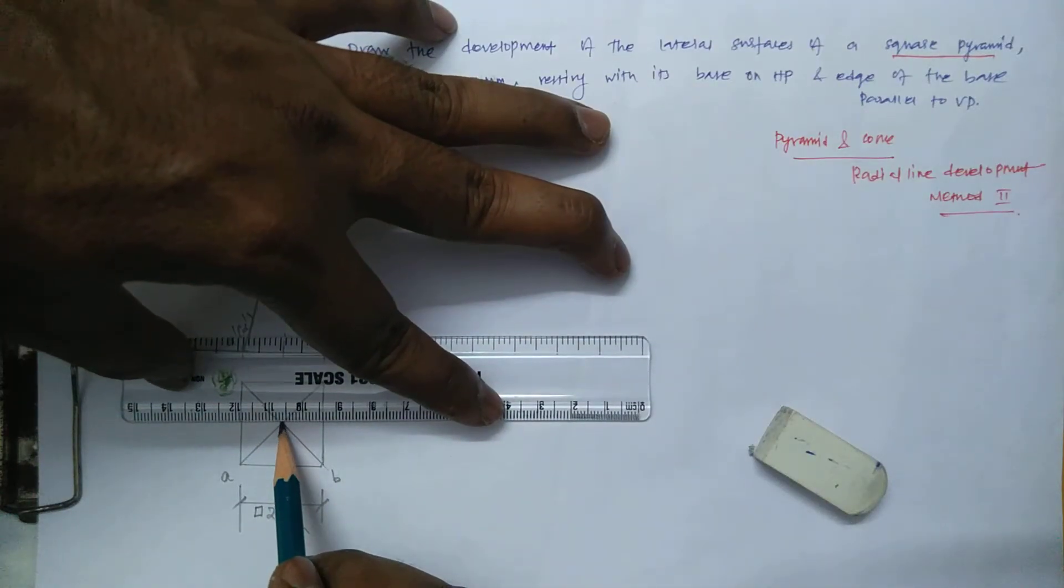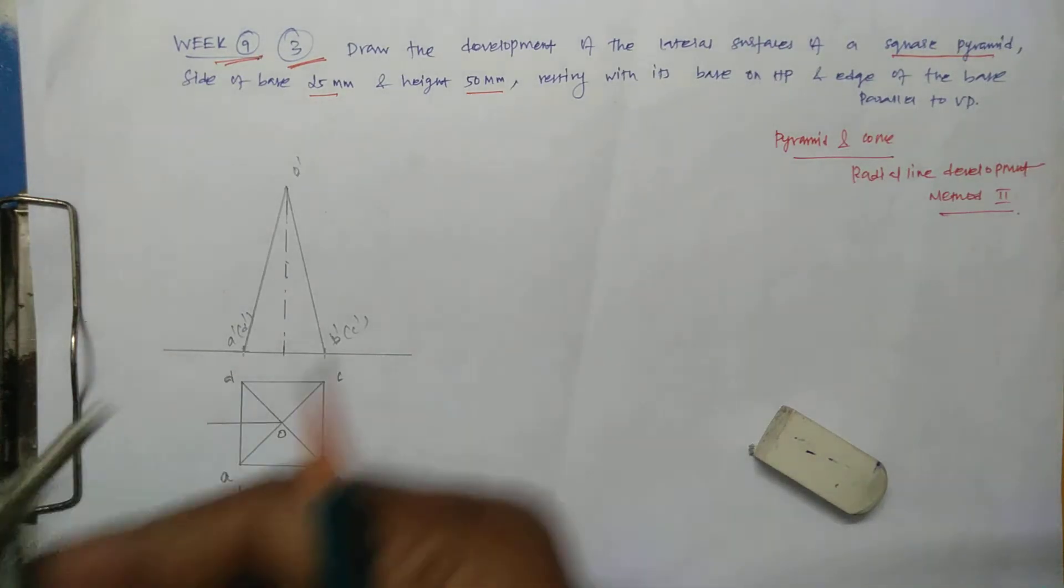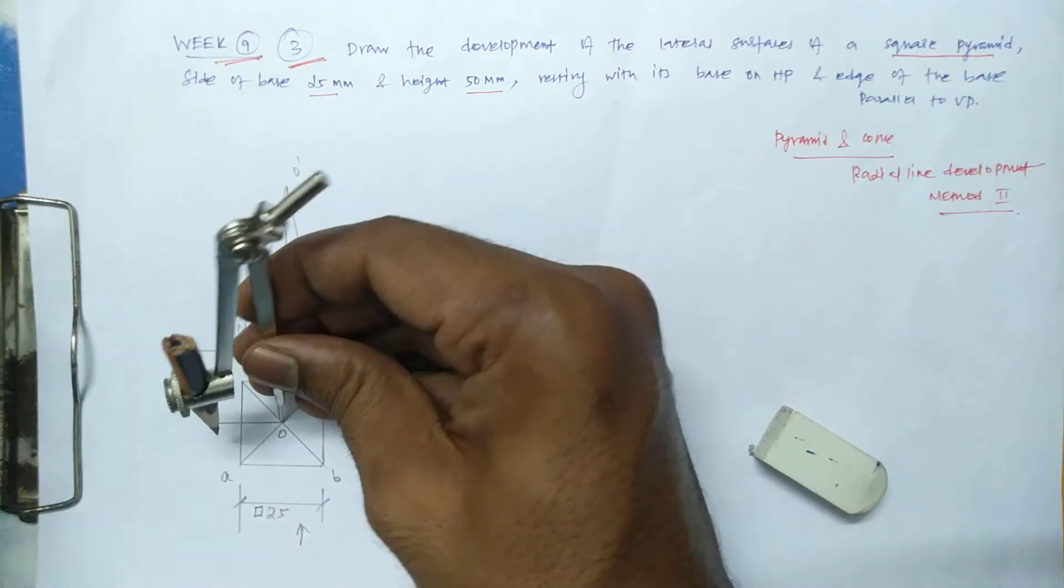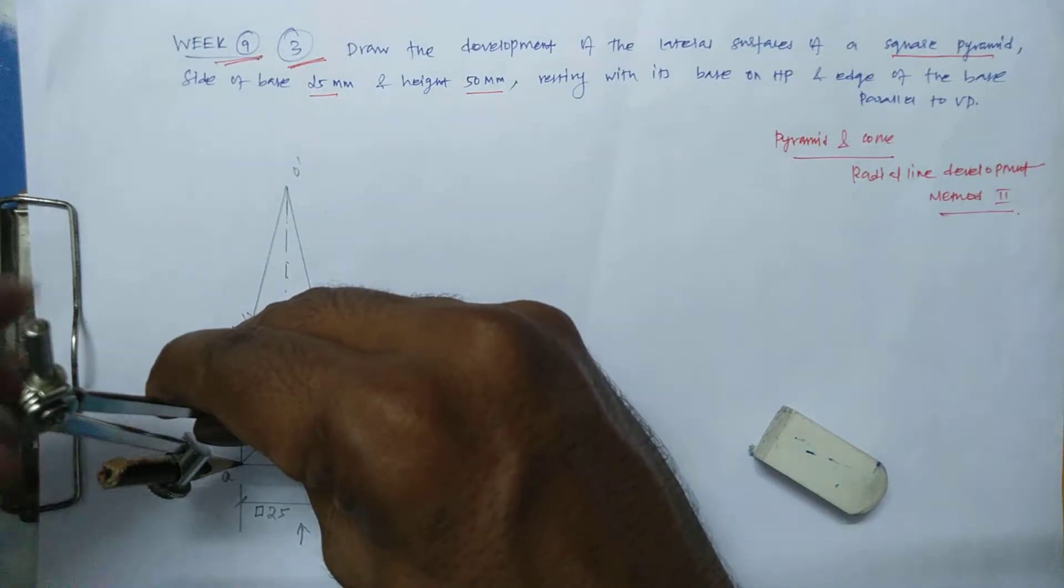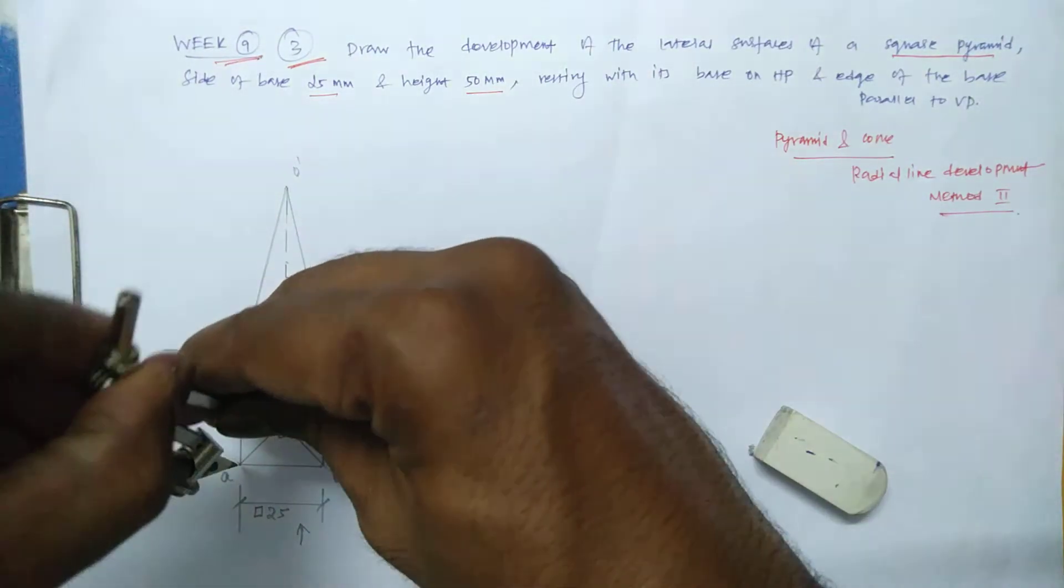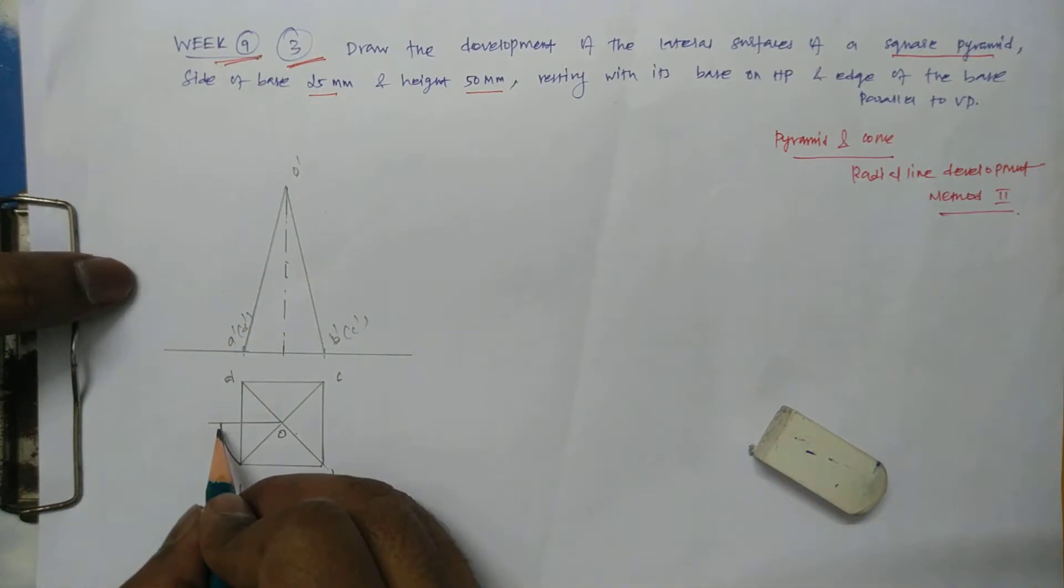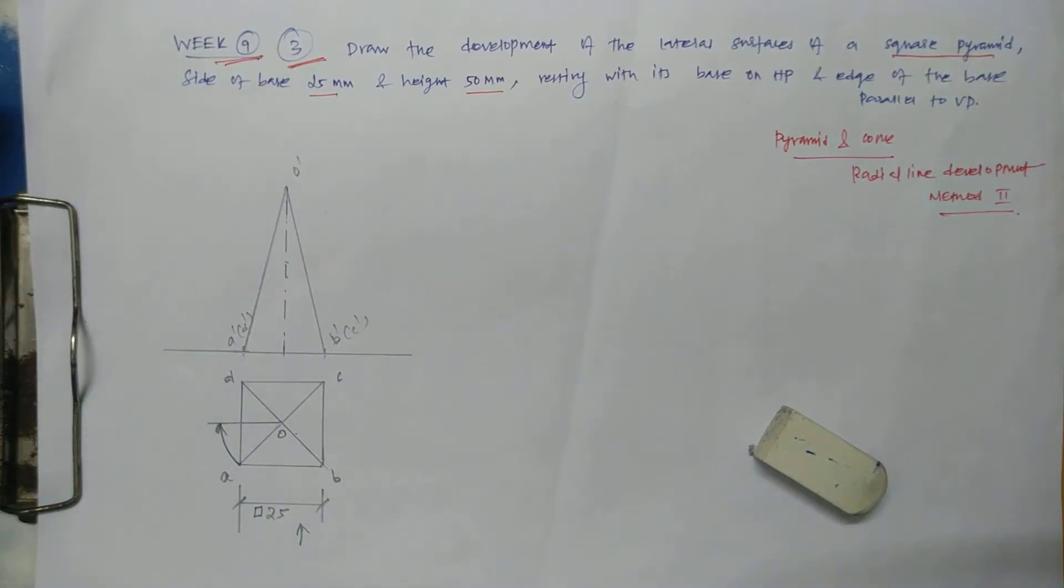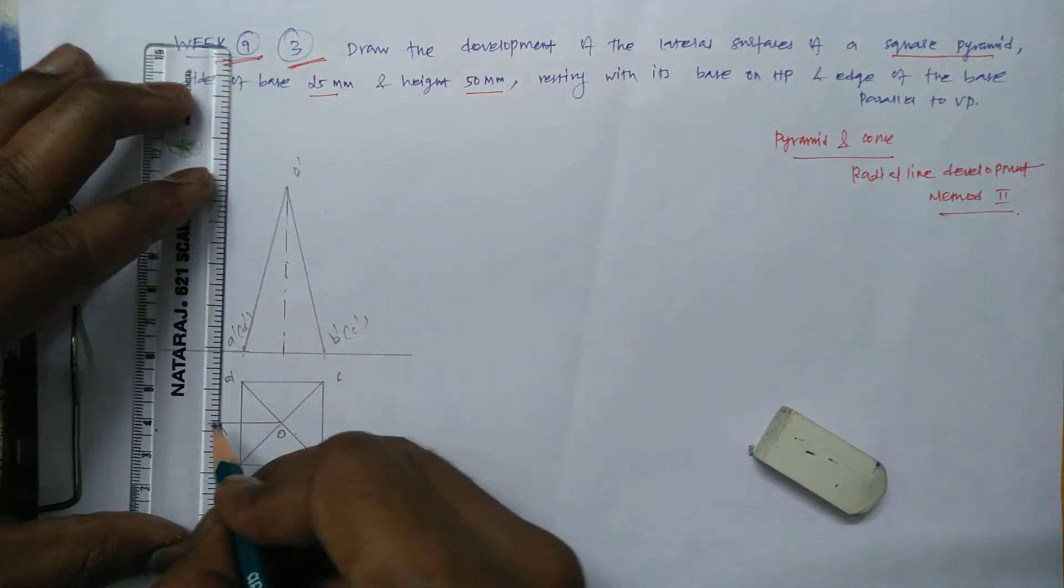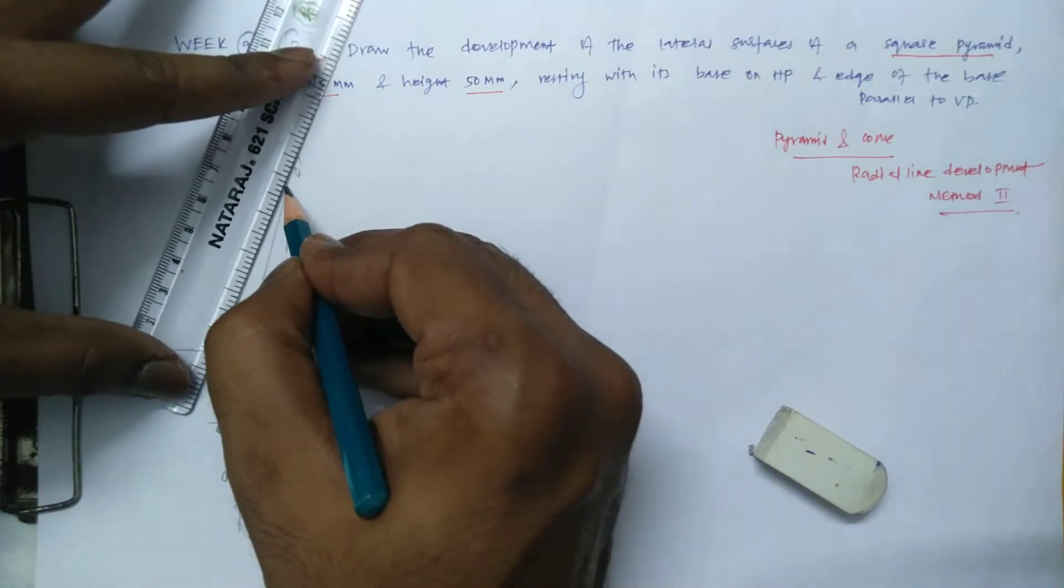For that, with respect to horizontal, you just make one horizontal line and keep O as a center, the point A as a radius. Make an arc. This arc will touch this horizontal line and erect a vertical line. This will touch the axis and you connect from the apex.